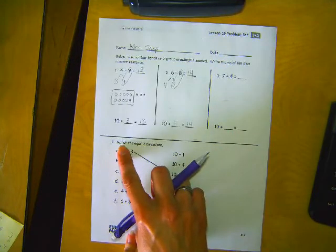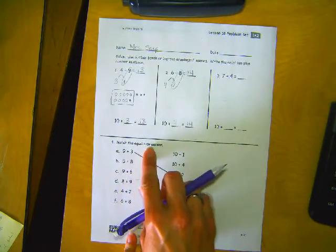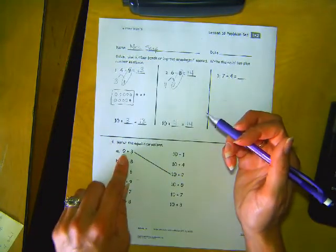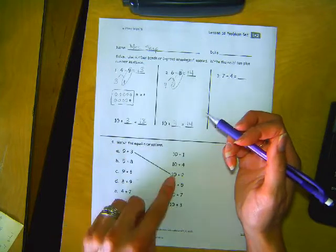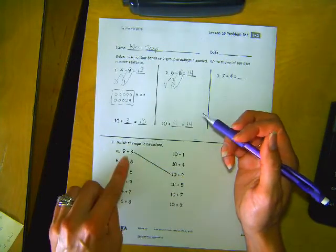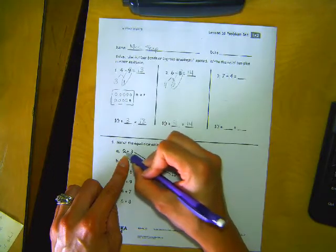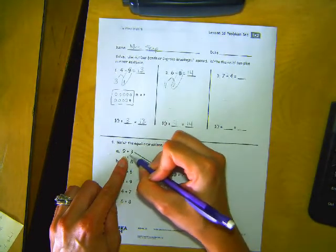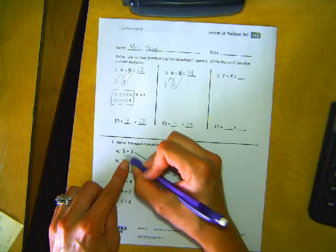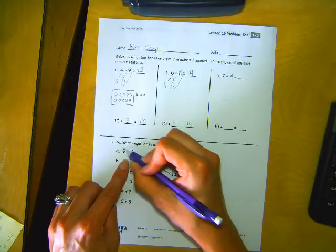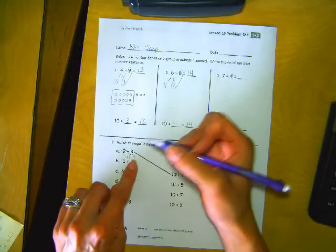Let's read the directions here. Match the equal expressions. So they matched 9 plus 3 to 10 plus 2. They did that by making... 3, taking one away from 3 to make a friendly ten with 9 and 2. So this is how they got the ten and then plus two more.